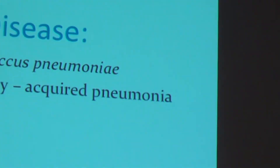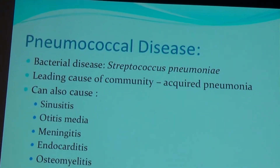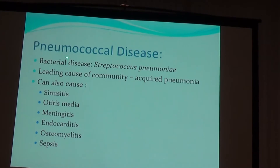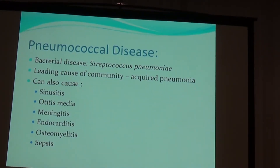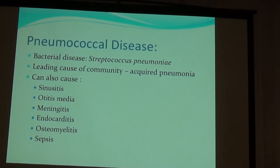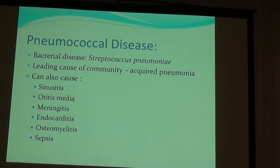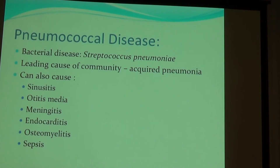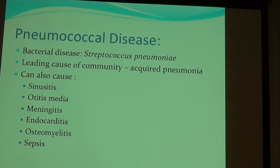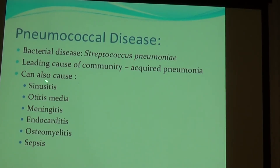Next, I'd like to talk about pneumococcal disease and prevention with Pneumovax. Pneumococcal disease is caused by the bacteria Streptococcus pneumoniae and is the leading cause of community-acquired pneumonia — pneumonia you get living at home as opposed to in a hospital or nursing home. In addition to pneumonia, pneumococcal disease can cause sinusitis, otitis media (ear infections), meningitis, endocarditis, osteomyelitis, and sepsis — where bacteria enters the blood causing drops in blood pressure and other serious complications. So pneumococcal disease is not just about pneumonia.